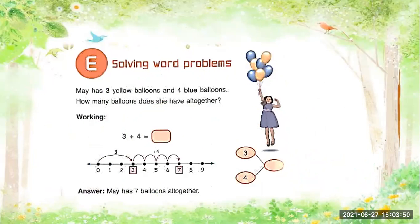Another example — let us solve the word problems again. May has three yellow balloons and four blue balloons. How many balloons does she have all together? Write the number sentence or addition sentence: three plus four is equal to seven. So May has seven balloons all together.